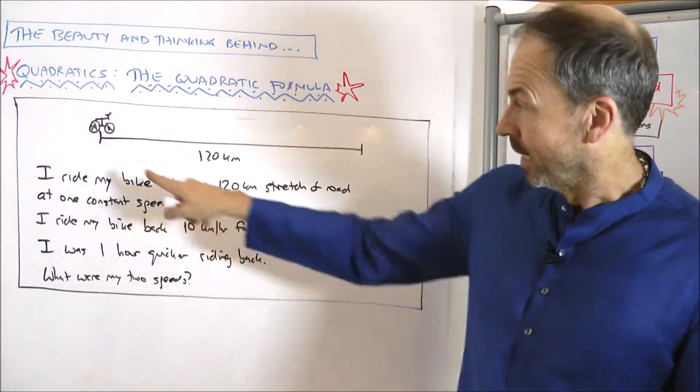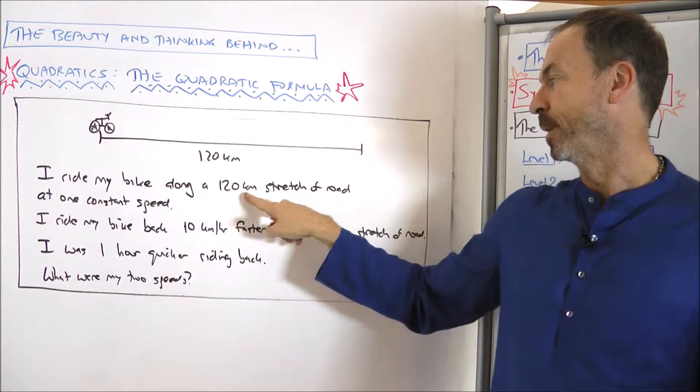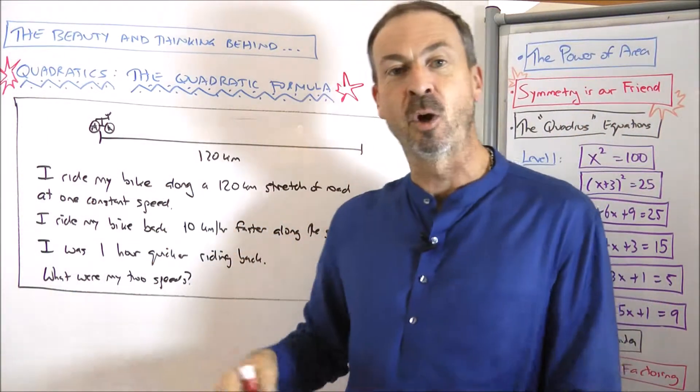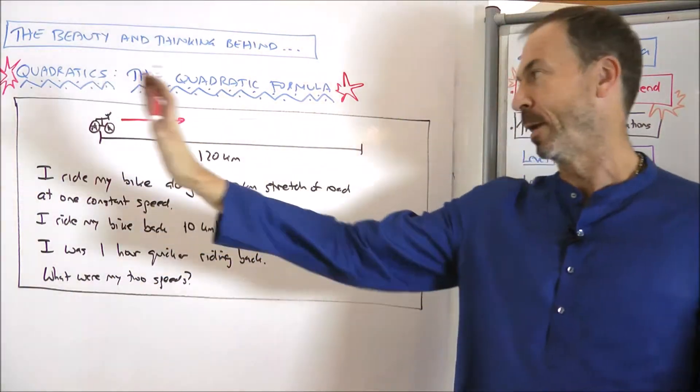The question says, here's a 120 kilometer stretch of road. So I ride my bike along a 120 kilometer stretch of road at one constant speed. So I'll go at some constant speed, I don't know, V, all the way along the road.